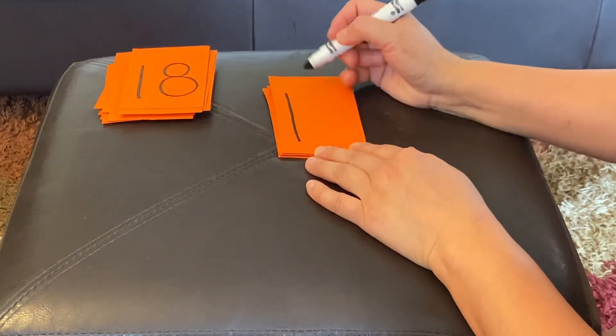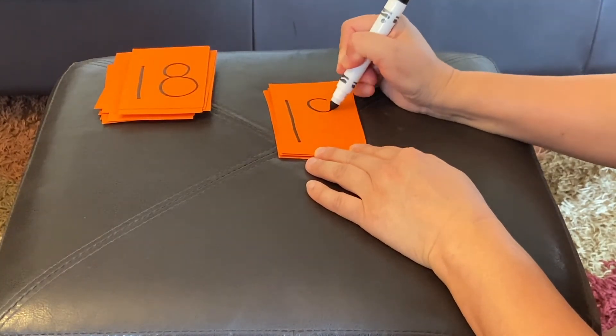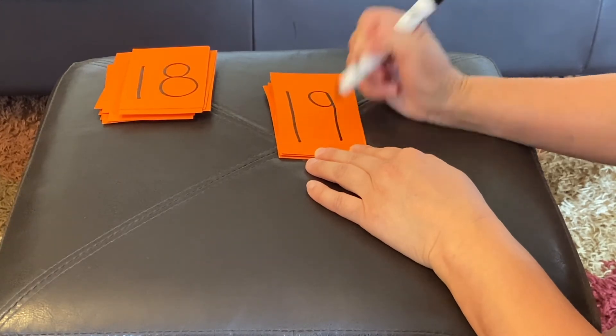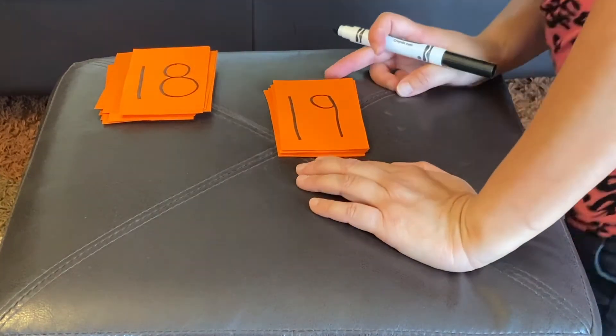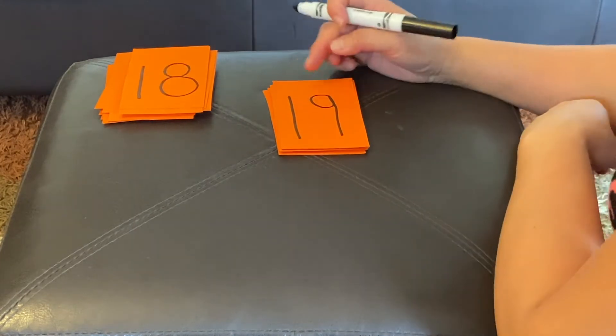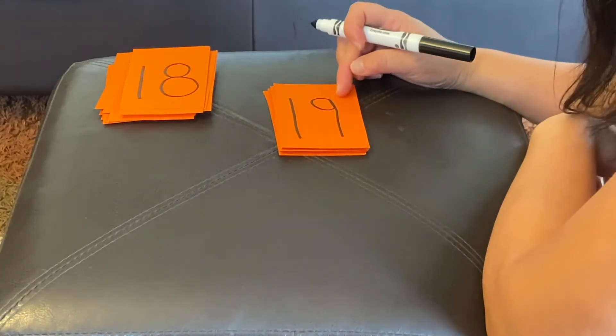Nineteen, a one, and a nine. So, nineteen means I have one group of ten, and then nine ones.